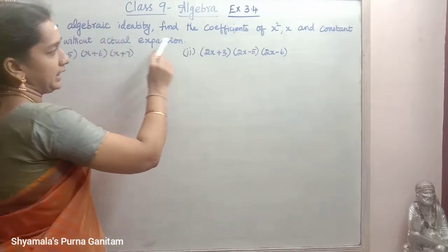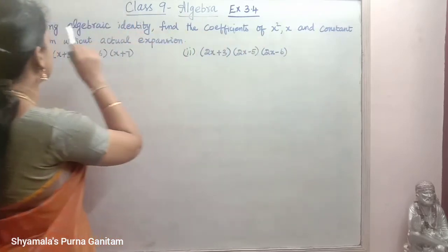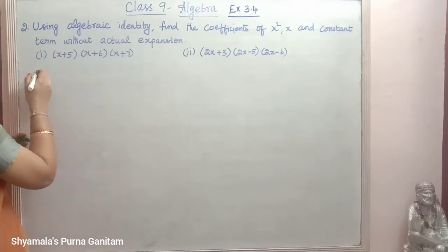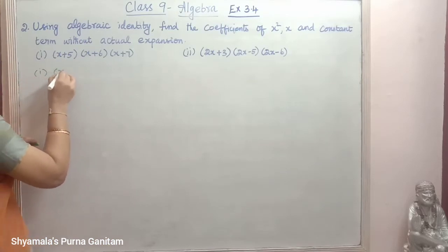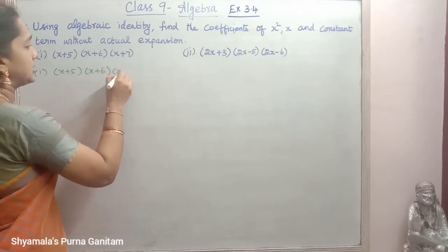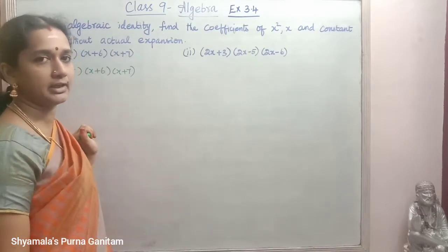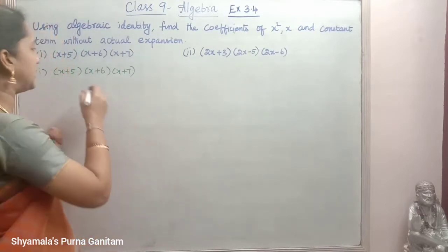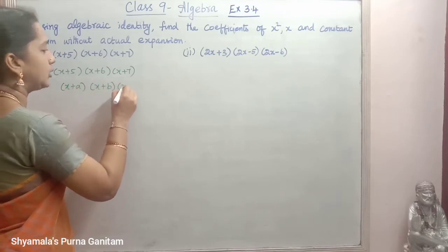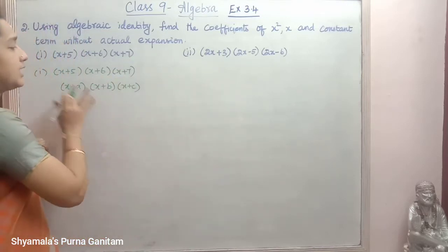Using algebraic identity, find the coefficients of x squared, x, and the constant term without actual expansion. For the 1st sum: (x+5)(x+6)(x+7). This is of the form of the identity (x+a)(x+b)(x+c). Both sums are of the same identity.